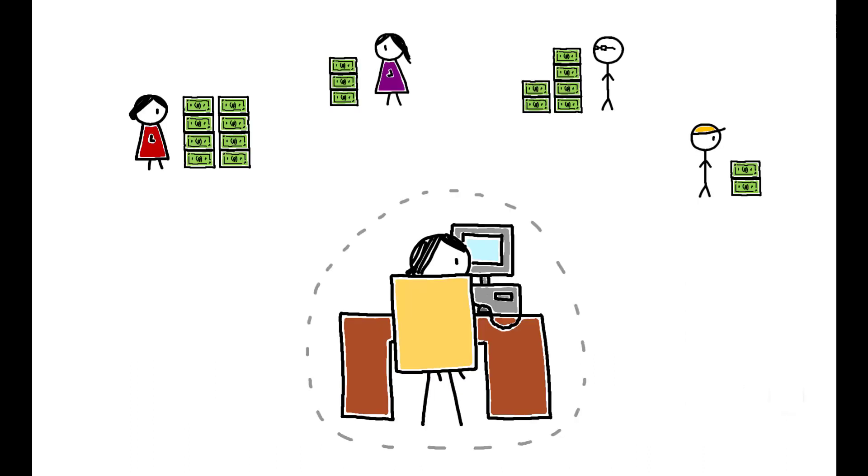Most tellingly, a regulatory change removed anonymity in 2014. After that point, any individual could identify who had searched for their tax records, a change which led to an 88% drop in the number of searches.